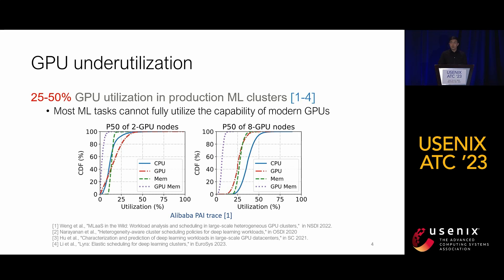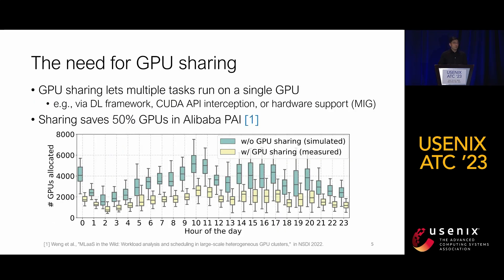Interested readers can refer to our paper, 'Machine Learning as a Service in the Wild,' published at NSDI 2022 and other related works. A natural solution to address low GPU utilization is to share GPUs, enabling multiple tasks to run on the same GPU concurrently in a time-multiplex or space-multiplex manner.